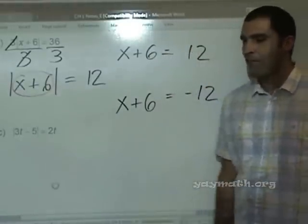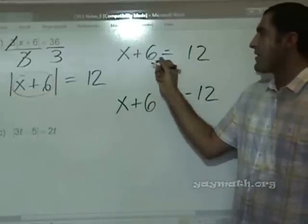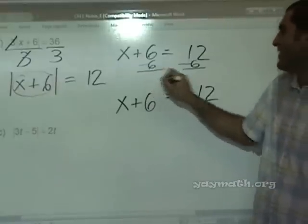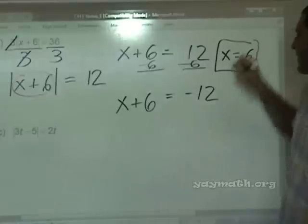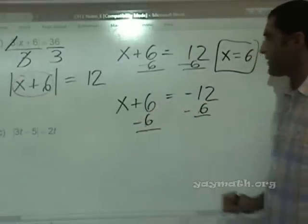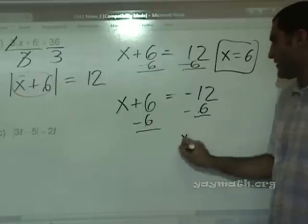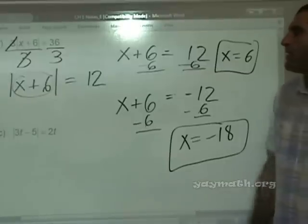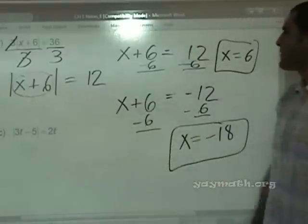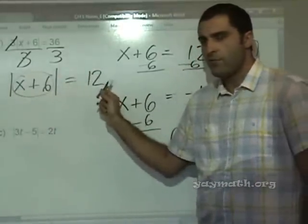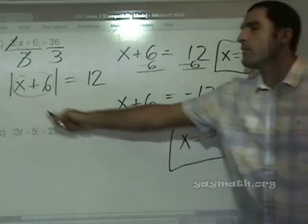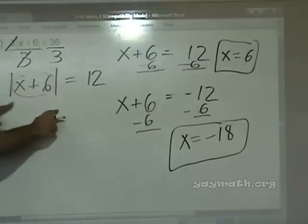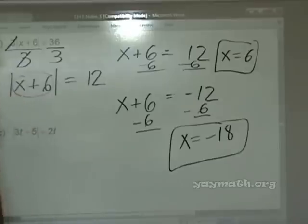So, we solve both. And simply subtract 6 on this one. Leaving what? X equals? 6. 6. X equals 6 here. Subtract 6 on this one. Leaving what? Negative 18. Negative 18. Alright. And then we can plug in both to verify. Let's go ahead and plug it here. 6 plus 6 is 12. Absolute value of 12 is 12. Volunteer to plug in negative 18 here. Yeah, go ahead. Negative 18 plus 6 is negative 12. Absolute value of negative 12 is 12. So that works as well. Right on. Okay.